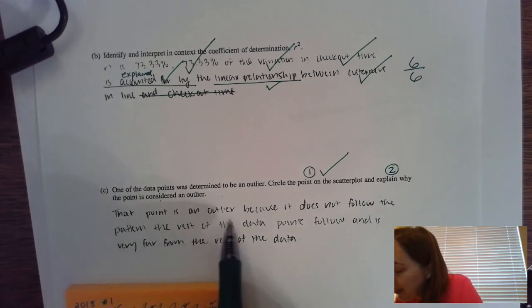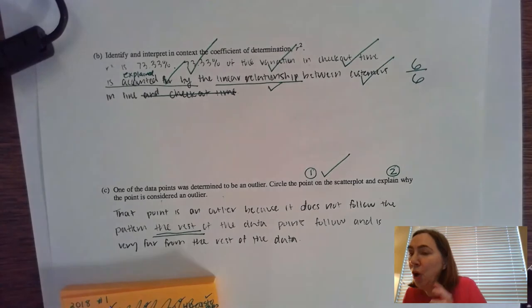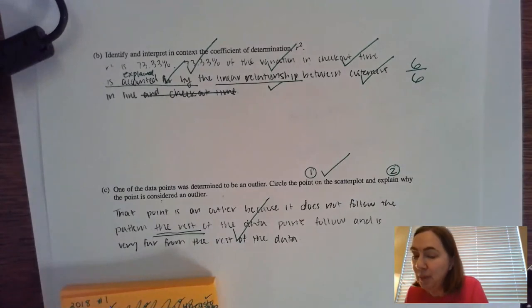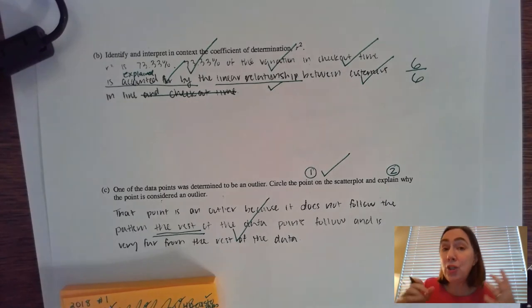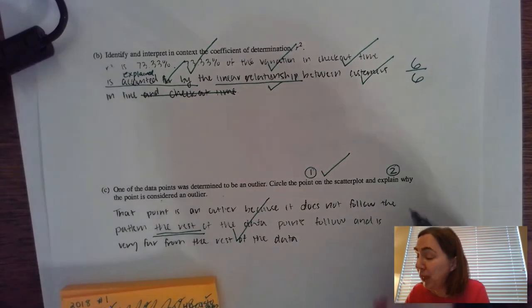My person says it's an outlier because it does not follow the pattern that the rest of the data points. Because it mentions all the rest, it compares it to all the other points. There is sort of a superlative involved there. This person is going to get credit for this particular problem. But if you said it was farther away from the line, farther is not enough. It has to be a superlative. You have to make sure that you say it's the farthest away from the line. It has the biggest residual. My person did compare it to the rest. So they do get full credit for this particular problem.